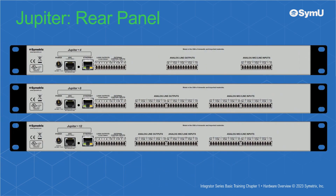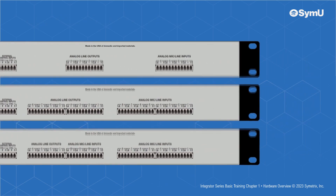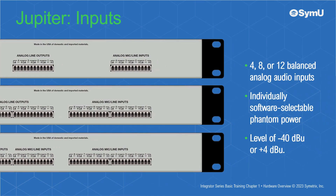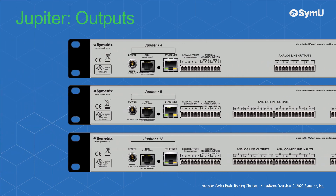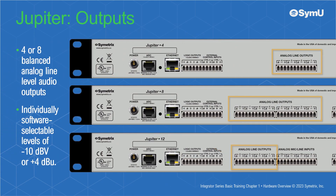Now let's look at the back panel of each of the three Jupyter I/O configurations. Depending on the configuration, there are either 4, 8, or 12 balanced analog audio inputs with individually software selectable mic or line level — that's negative 40 dBu or plus 4 dBu — as well as providing phantom power. Additionally, there are either 4 or 8 balanced analog line level audio outputs with individually software selectable levels of either negative 10 dBu or plus 4 dBu.